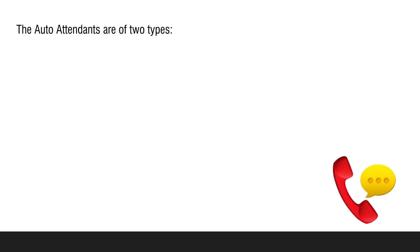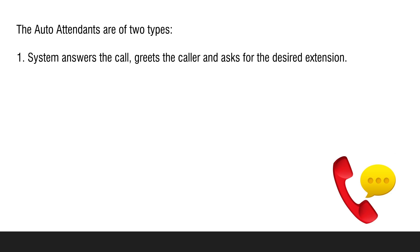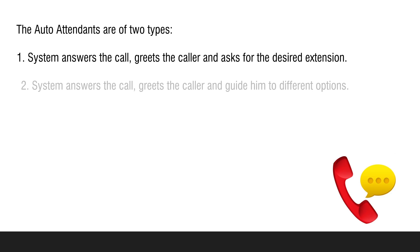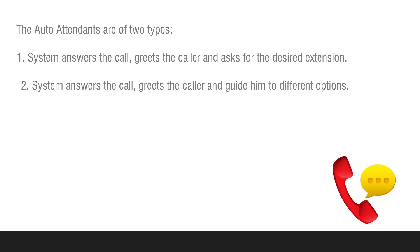The auto attendant are of two types. First, the system answers the call, greets the caller and asks for the desired extension. Second, the system answers the call, greets the caller and guides him to different options.